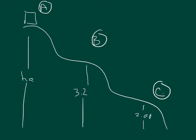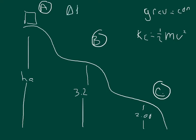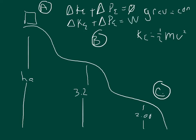In this problem we have a conservative force — gravity is a conservative force. Whenever you have a conservative force you can use conservation of energy, especially when dealing with velocity. The conservation of energy equation is: the change in kinetic energy plus the change in potential energy equals zero. If we were using non-conservative forces we would use the work-energy theorem instead, where those equal the work done.